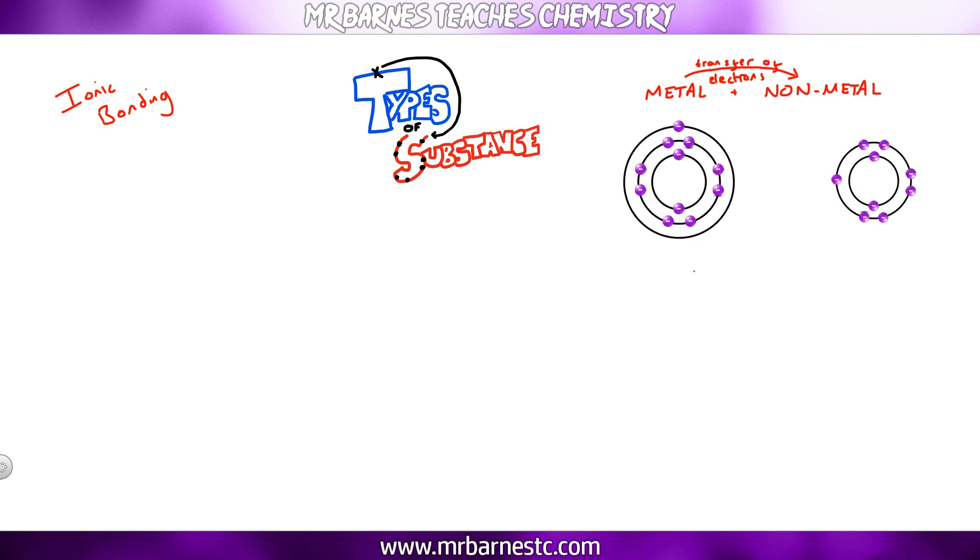For example, I've got a metal here which has one electron in the outer shell, which means it's in group one. It wants to lose that one electron, it's easier to lose it. The element on the right has got seven electrons in the outer shell, it's a non-metal, therefore it's easier for it to gain one electron.